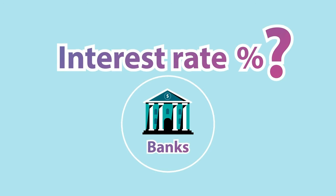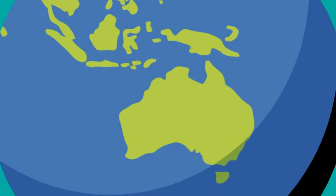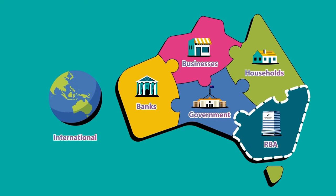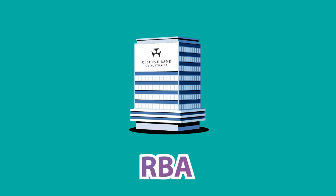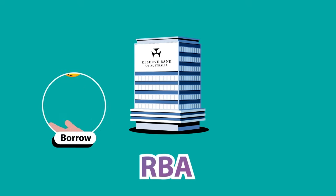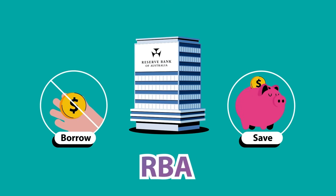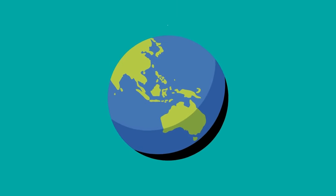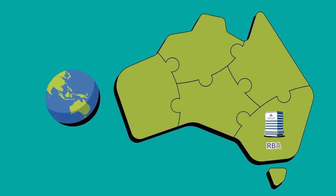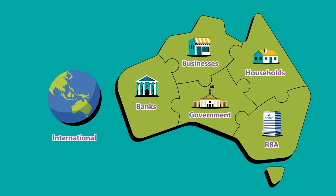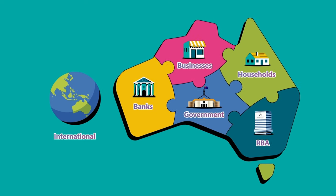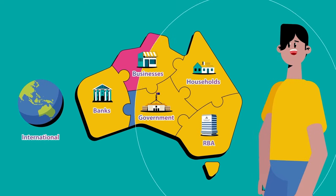But how do banks decide what interest rate to offer? That's where the final piece of our economy puzzle comes in. The interest rates banks offer are influenced by Australia's central bank, called the Reserve Bank of Australia, or RBA. It's not like other banks — you can't borrow or save with it. Instead, it has a special job to help keep Australia's economy running smoothly. We'll find out how in the next video. When we put all of this together, we get our whole economy. All the sectors are connected, and a decision by one can affect the rest. So you aren't just part of the economy — your decisions can influence it.